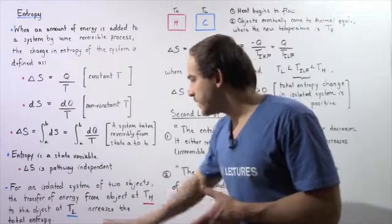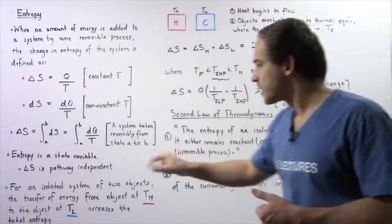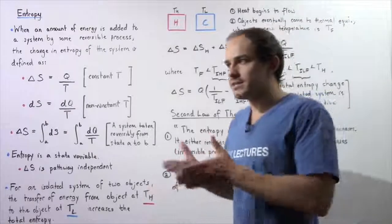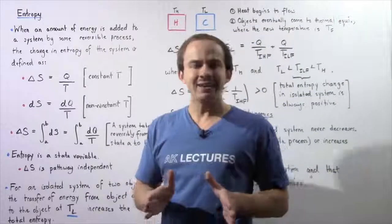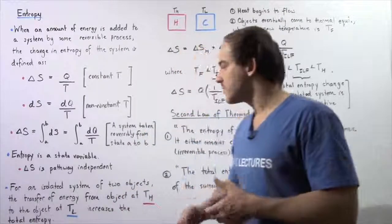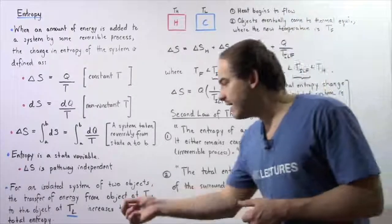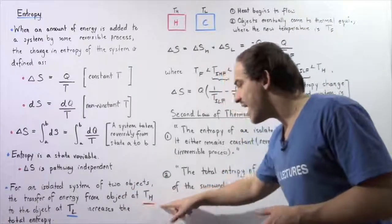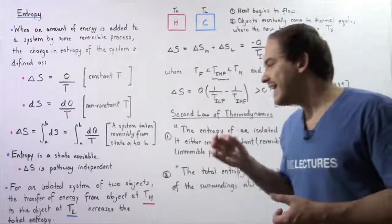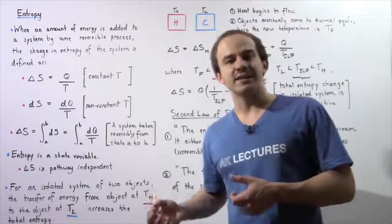Let's look at the following statement and then see why it is true. For an isolated system — a system in which mass and energy do not flow in or out — and for an isolated system of two objects, the transfer of energy from the object at the higher temperature TH to the object at a lower temperature TL increases the total entropy of that isolated system.